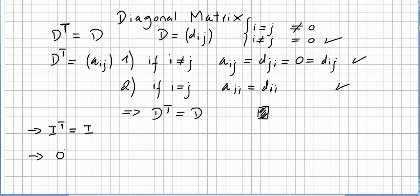What about the zero matrix transpose — is it equal to zero? Well, zero is a square matrix, so its transpose will also be a square matrix. Otherwise the transpose of the zero matrix and the zero matrix would have different sizes, and if they have different sizes they cannot be equal. So the zero matrix transpose is equal to zero.